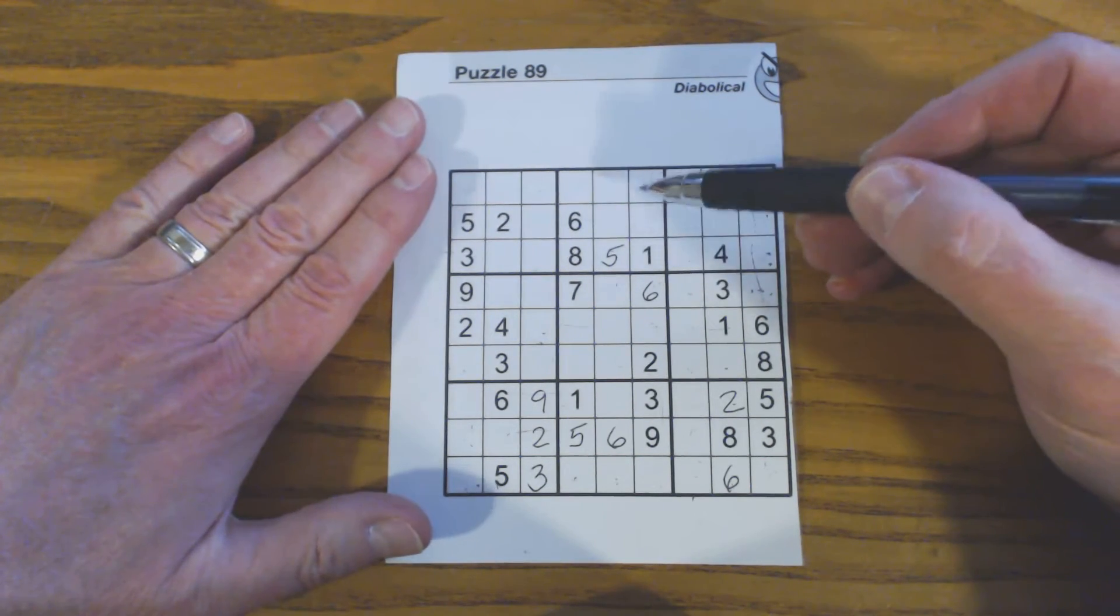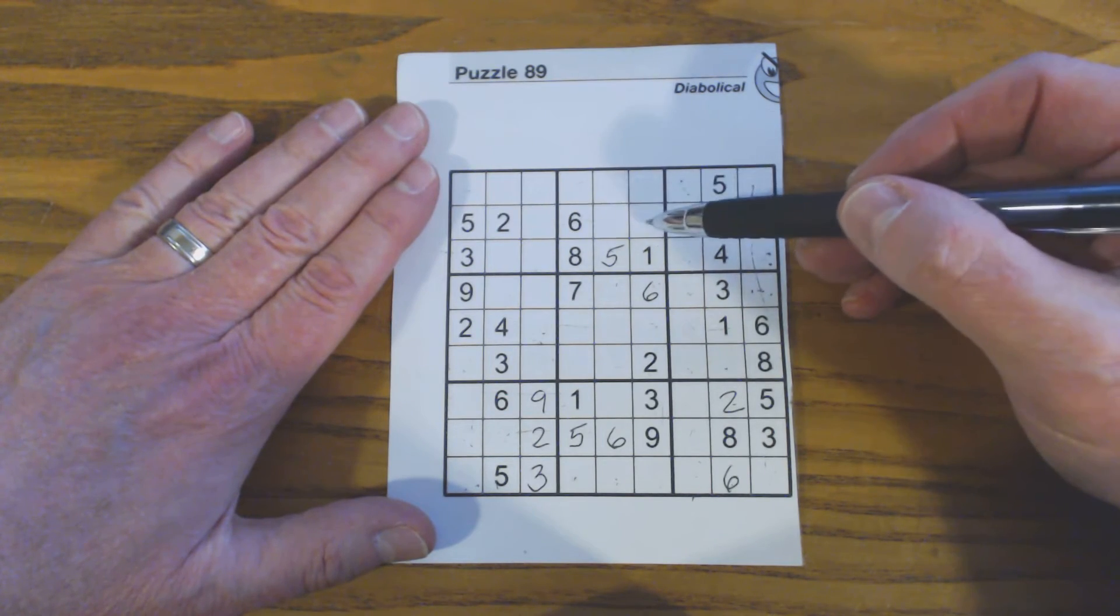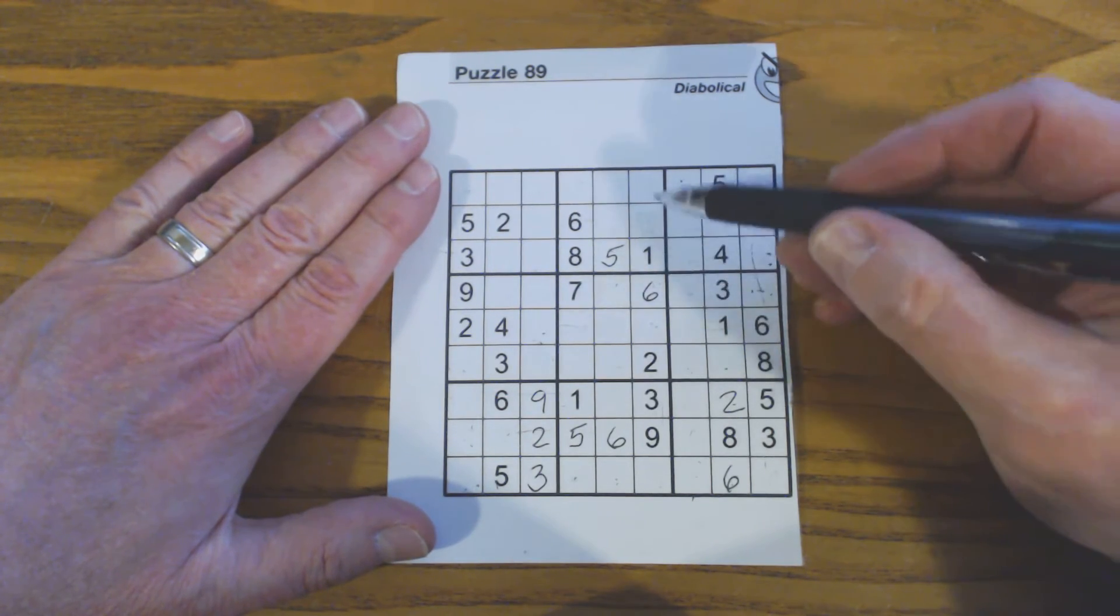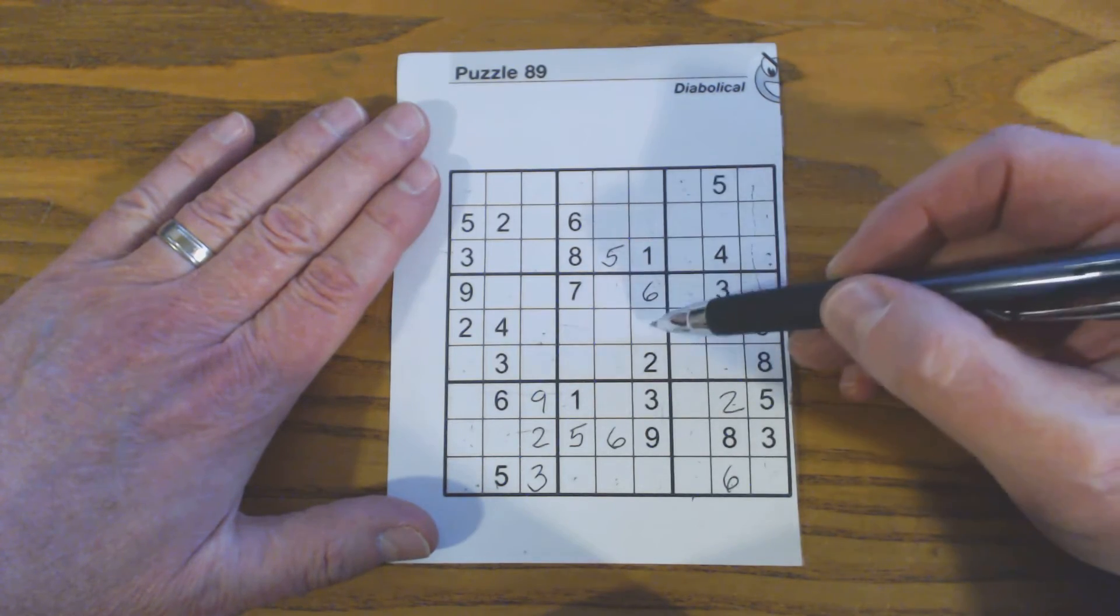We don't have enough information to fill the 4 and 7 in yet either, but now we know every number here except for these two.